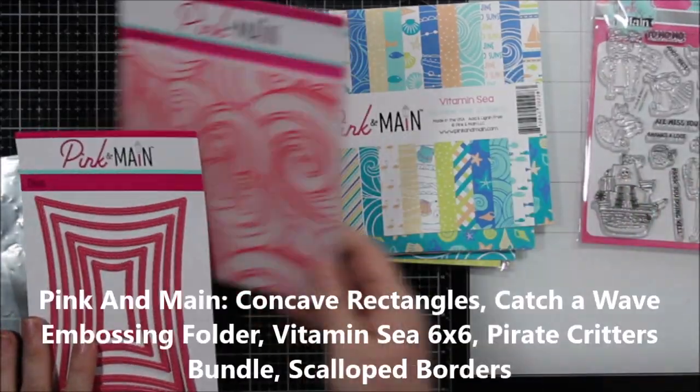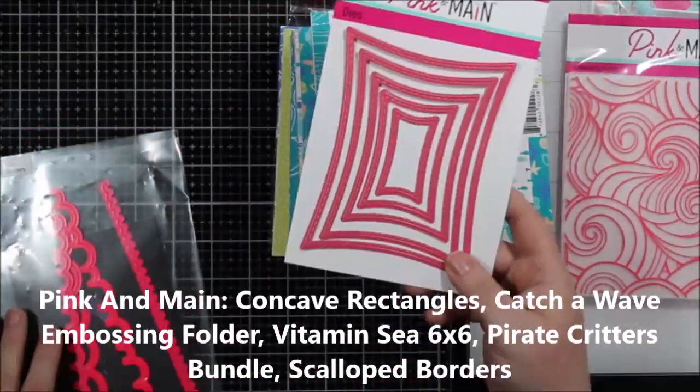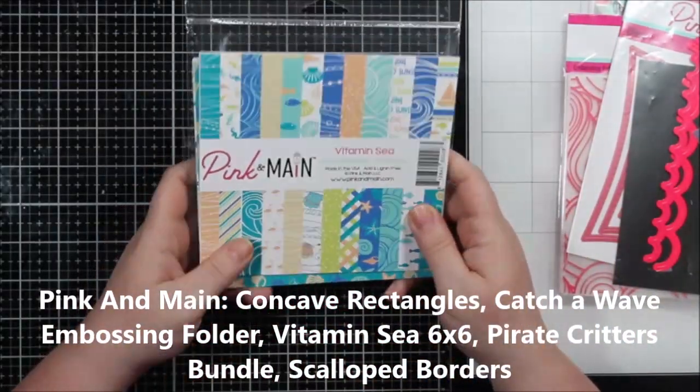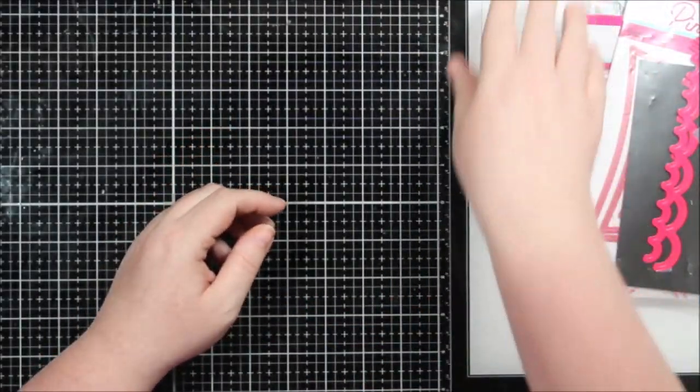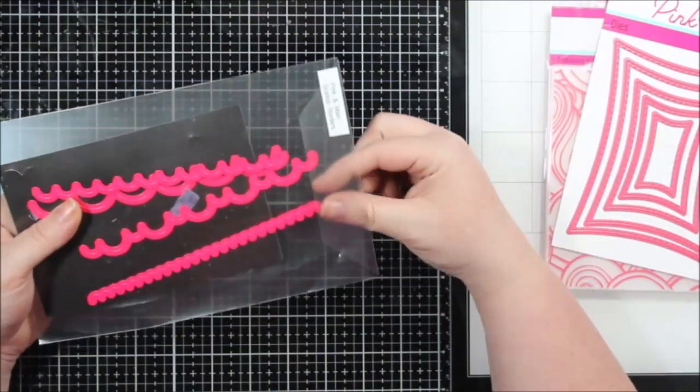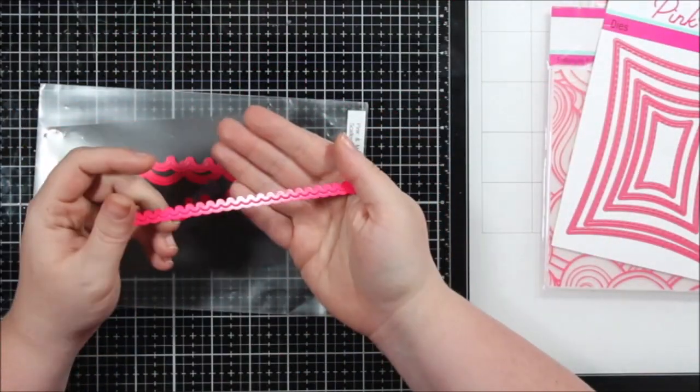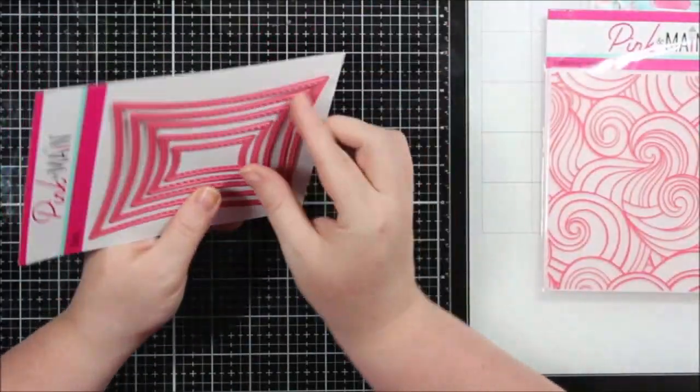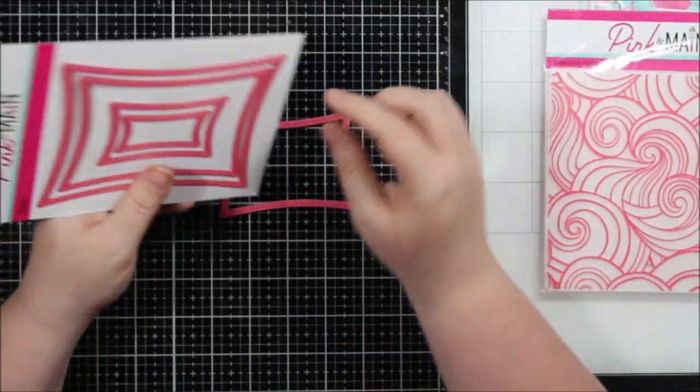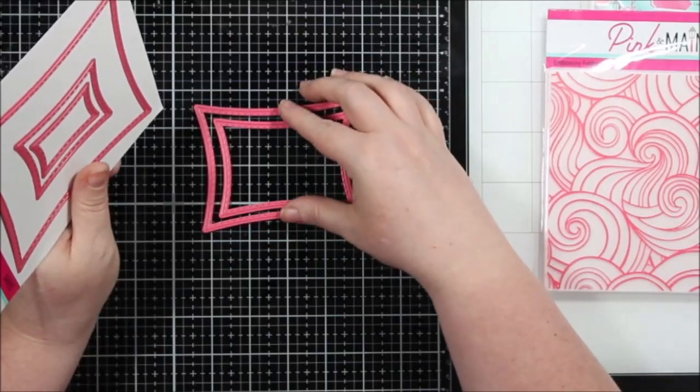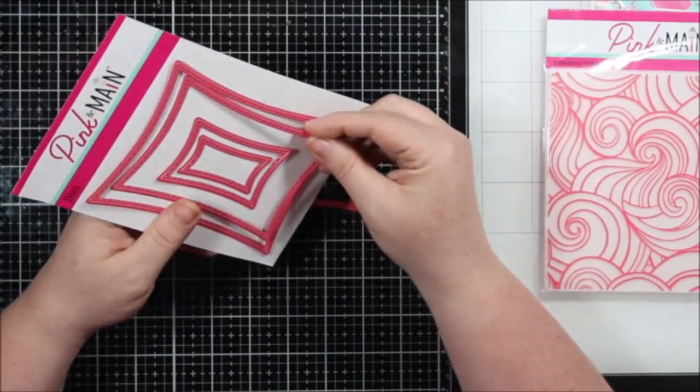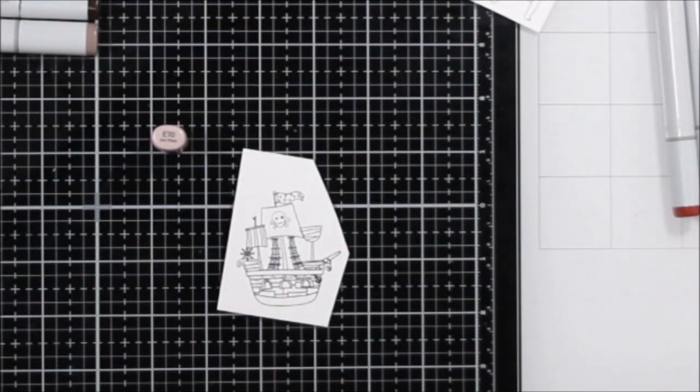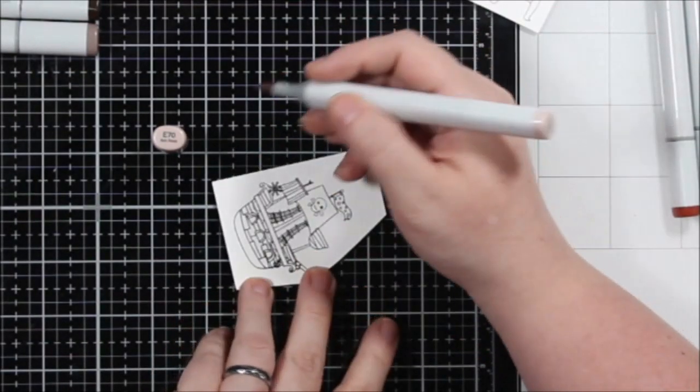Hi everyone, it's Renee with Delaney Jane Cards. Welcome back to my channel. I thought I would do a project today featuring some Pink and Main products. I love Pink and Main. I have been collecting their dies for a long time, long enough that I believe this Scallop border die set is actually retired. This is a newer set here, these concave rectangles. They have the stitch detail and I thought that they would be fun to use.